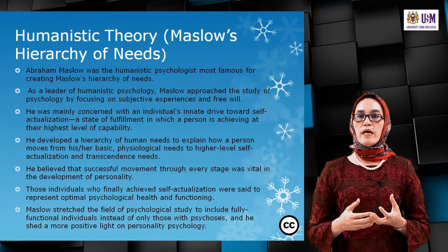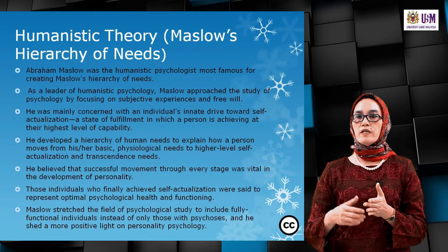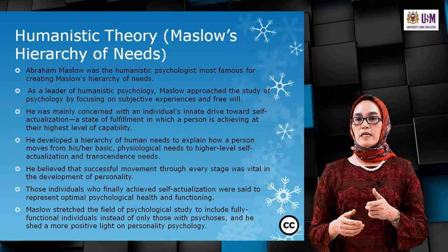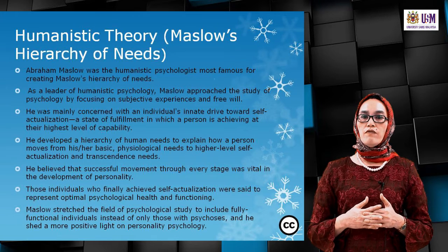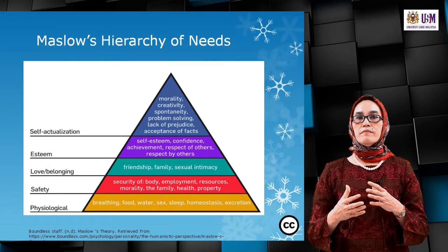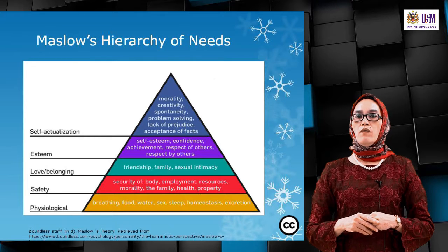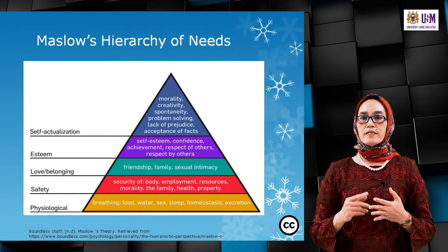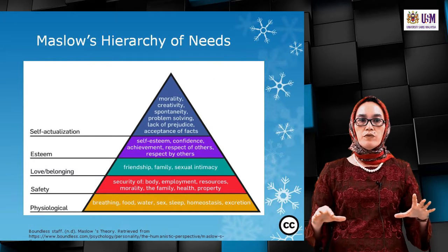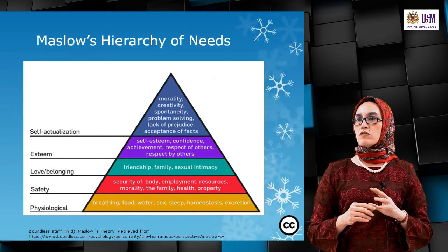Maslow believed successful movement through every stage was vital in the development of personality, and individuals who achieve self-actualization represent optimal psychological health and functioning. Maslow's hierarchy is a triangle where the most basic level is physiological needs — breathing, food, water, sex, sleep, homeostasis, and excretion. Above that are safety needs, then love and belonging, then self-esteem needs, and finally self-actualization. We cannot treat a person like a robot without understanding their needs.